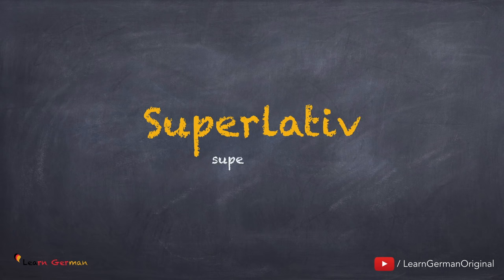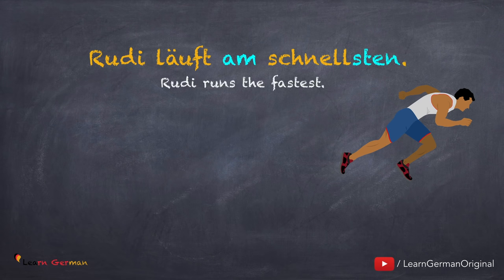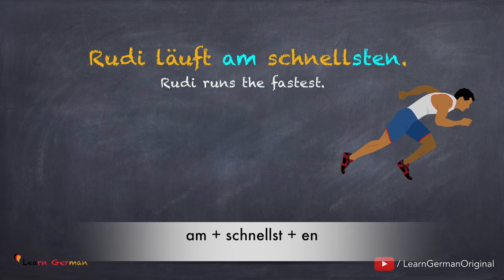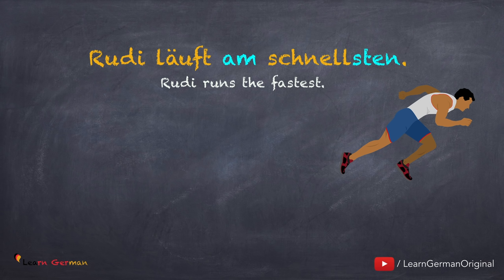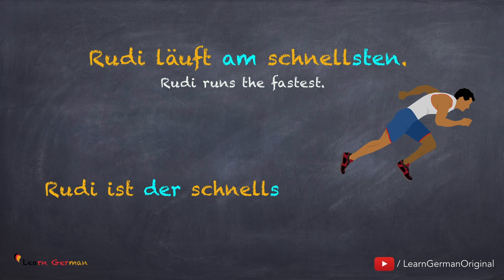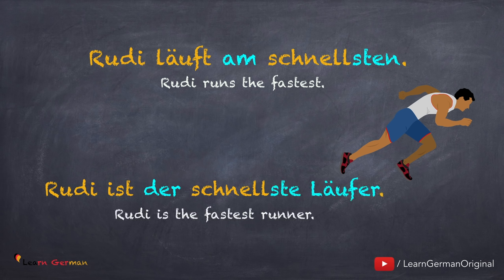Jetzt schauen wir uns ein paar Sätze mit Superlativ an. Superlativ benutzt man, wenn man zwei oder mehrere Sachen oder Personen vergleicht. Hier ist der erste Satz: Rudi läuft am schnellsten. In the previous chapter, you learned that for making the superlative of an adjective, you use am plus the ending S-T-E-N. Since am is a dative preposition, the adjective schnellst takes the ending A-N. We can also use the superlative form along with a noun and an article. For example: Rudi ist der schnellste Läufer. In this case, since schnellste is being used as an adjective for der Läufer, you will use the adjective endung E.